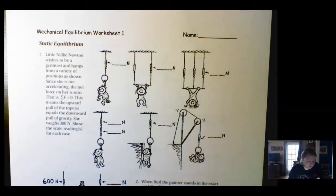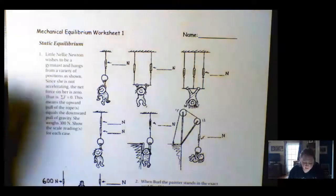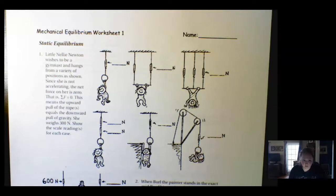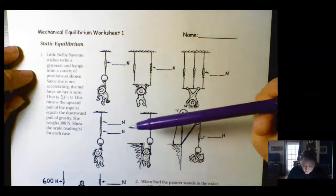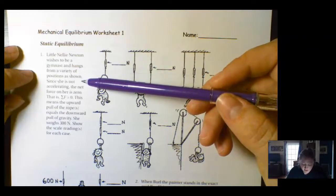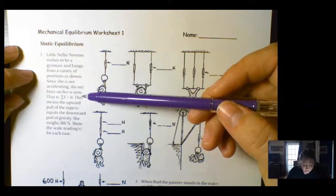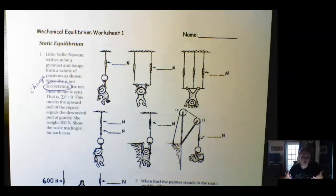Hello again you guys, it's Miss Miller and we're going to start working on this Mechanical Equilibrium Worksheet 1. Mechanical Equilibrium is all your forces are balanced. That means that all of the up forces have to equal all of the down forces. Let's just look at a few examples together and then you're going to have a few that you are responsible for.